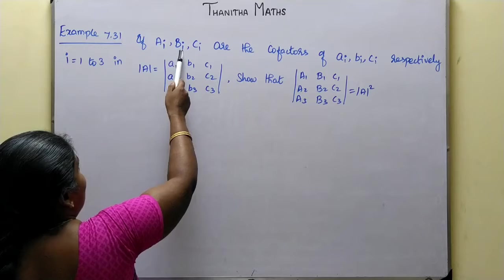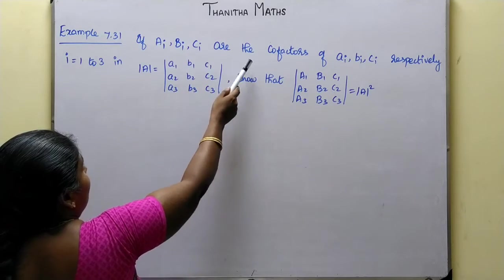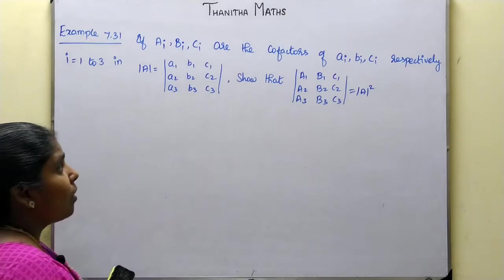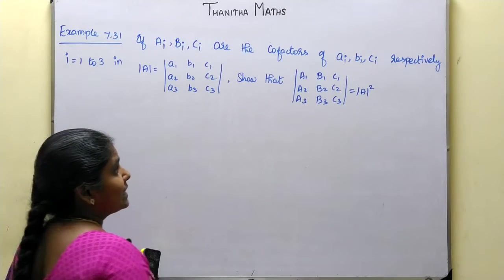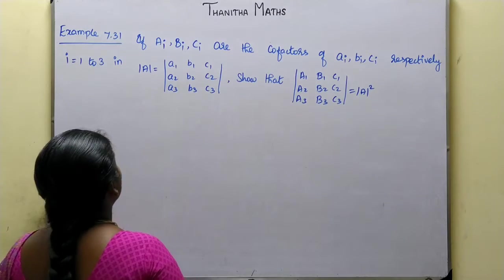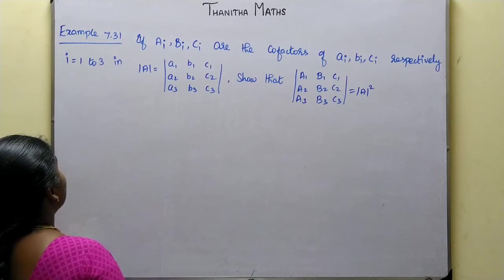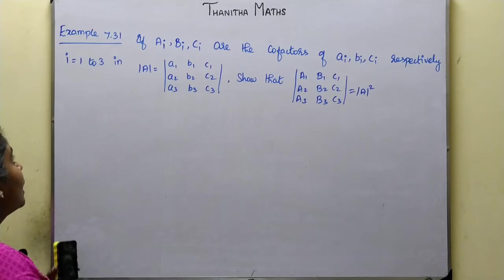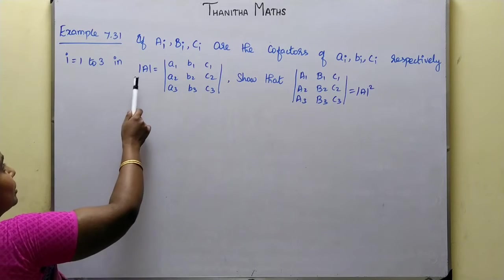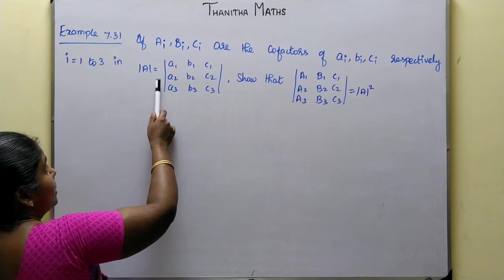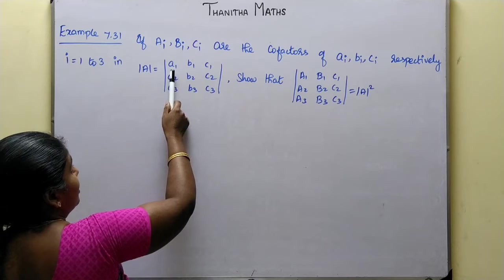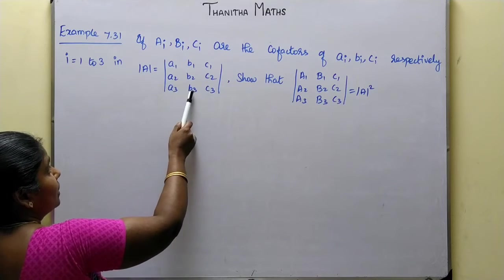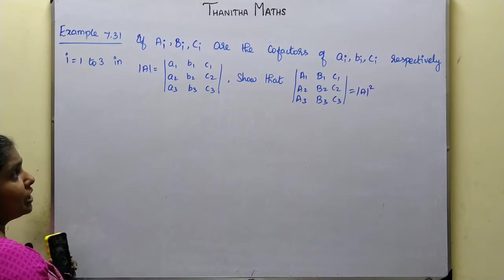If A_i, B_i, C_i are the co-factors of small a_i, b_i, c_i respectively, for i = 1, 2, 3, and the determinant of A equals the determinant with elements a1, b1, c1, a2, b2, c2, a3, b3, c3.